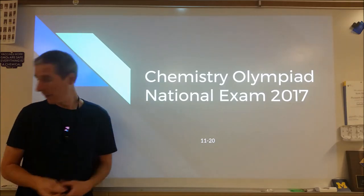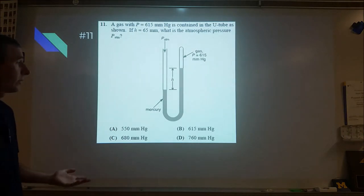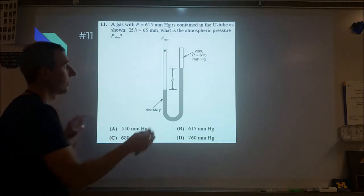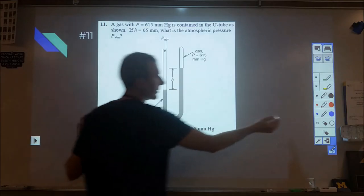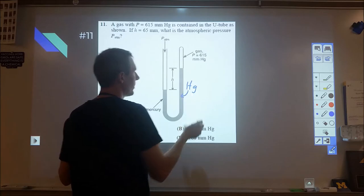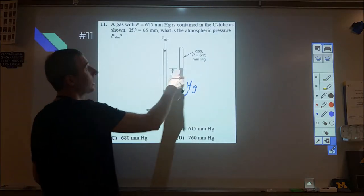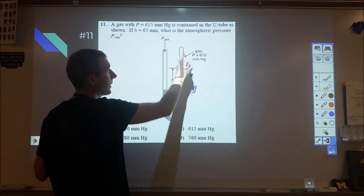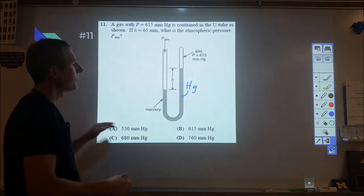This is the second part of the video, problems 11 through 20. Starting at number 11, this question seemed a little too simple, but we're looking at a U-tube with mercury in it. This shaded substance here is how they used to do gas measurements before they had sensors. We have a pressure of gas trapped in here, 615 millimeters of mercury. This end is open to the atmosphere.